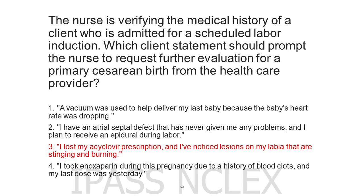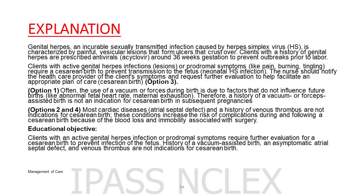Correct answer. Genital herpes, an incurable sexually transmitted infection caused by herpes simplex virus (HSV), is characterized by painful vesicular lesions that form ulcers that crust over. Clients with a history of genital herpes are prescribed antivirals (acyclovir) around 36 weeks gestation to prevent outbreaks prior to labor. However, clients with active genital herpes infections, lesions, or prodromal symptoms like pain, burning, or tingling require a cesarean birth to prevent transmission to the fetus (neonatal HSV infection). The nurse should notify the healthcare provider of the client's symptoms and request further evaluation to help facilitate an appropriate plan of care, including cesarean birth (option 3).